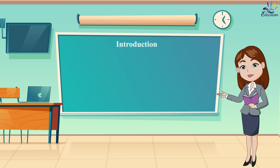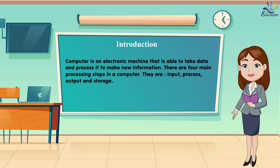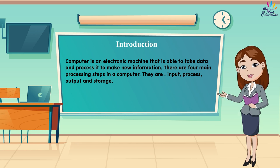Introduction. A computer is an electronic machine that is able to take data and process it to make new information. There are four main processing steps in a computer. They are Input, Process, Output, and Storage.